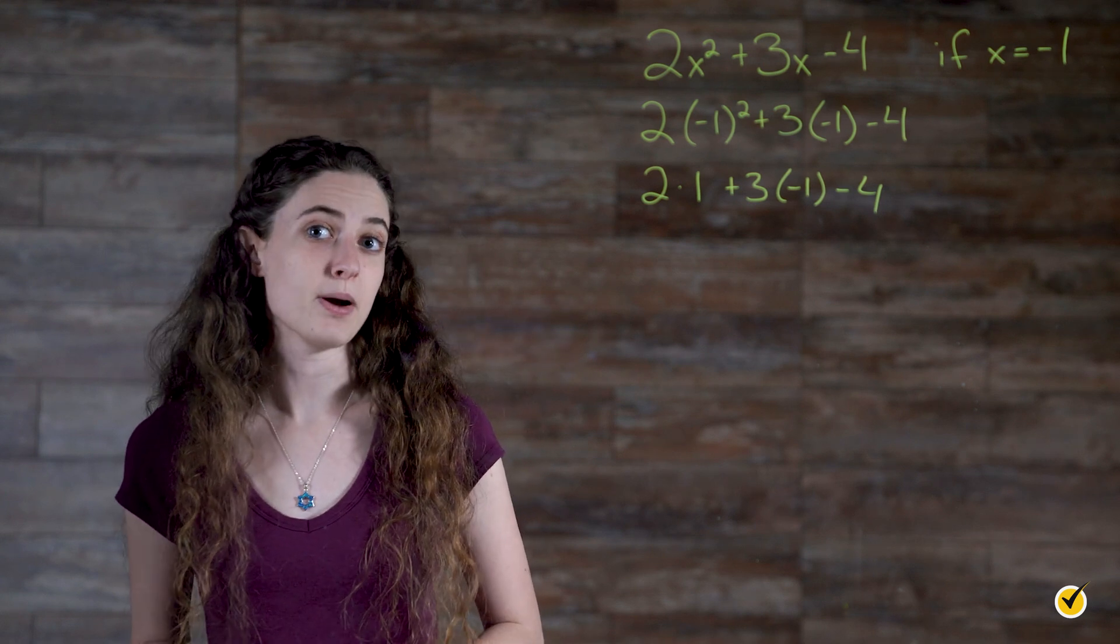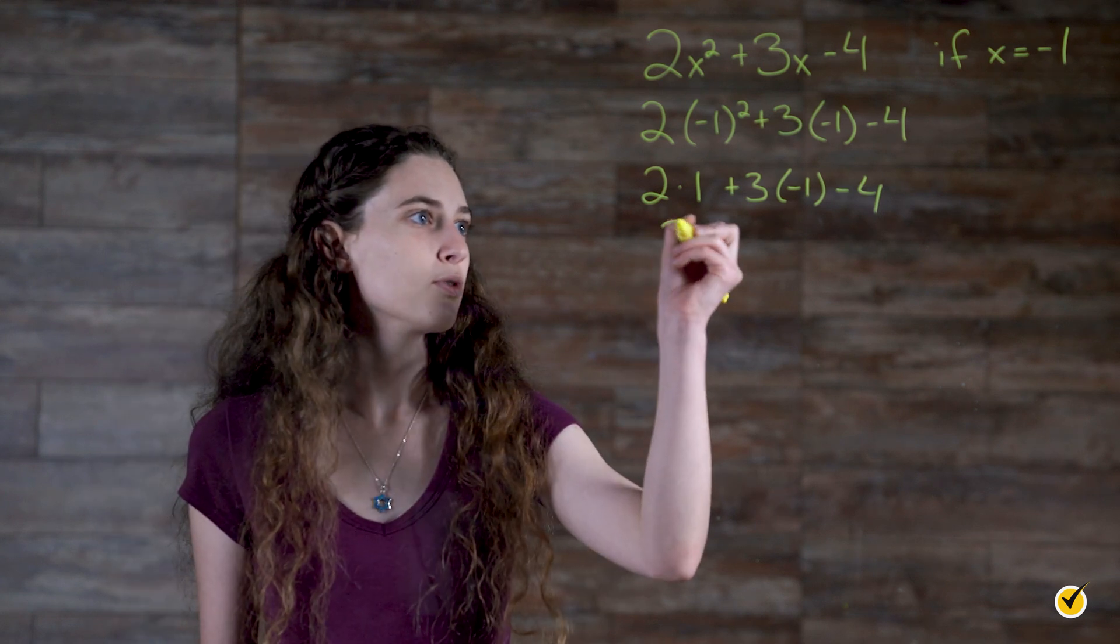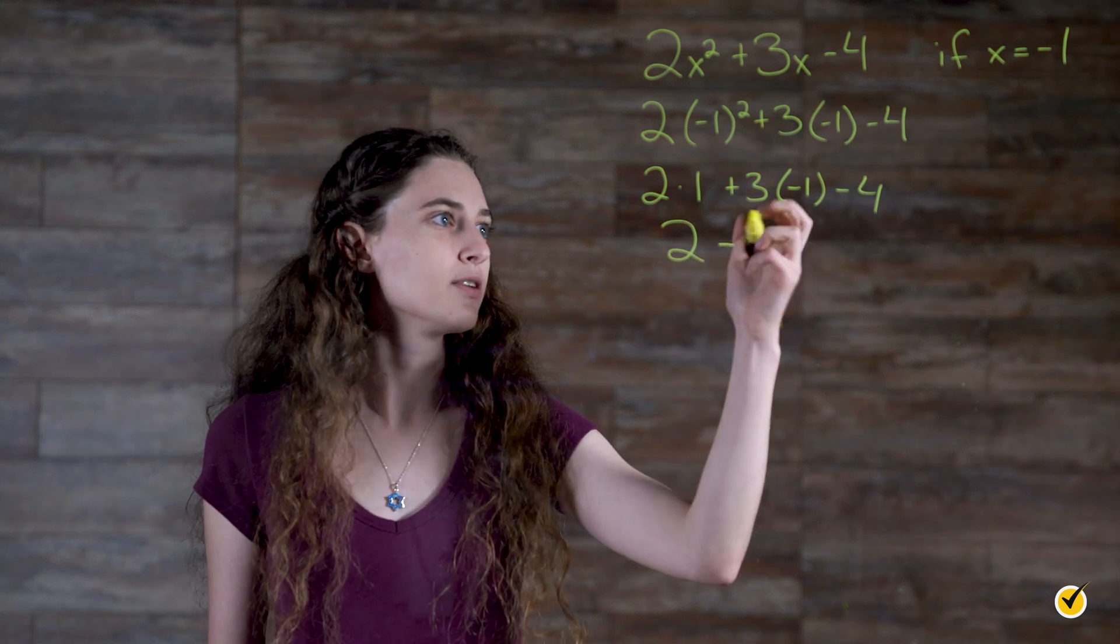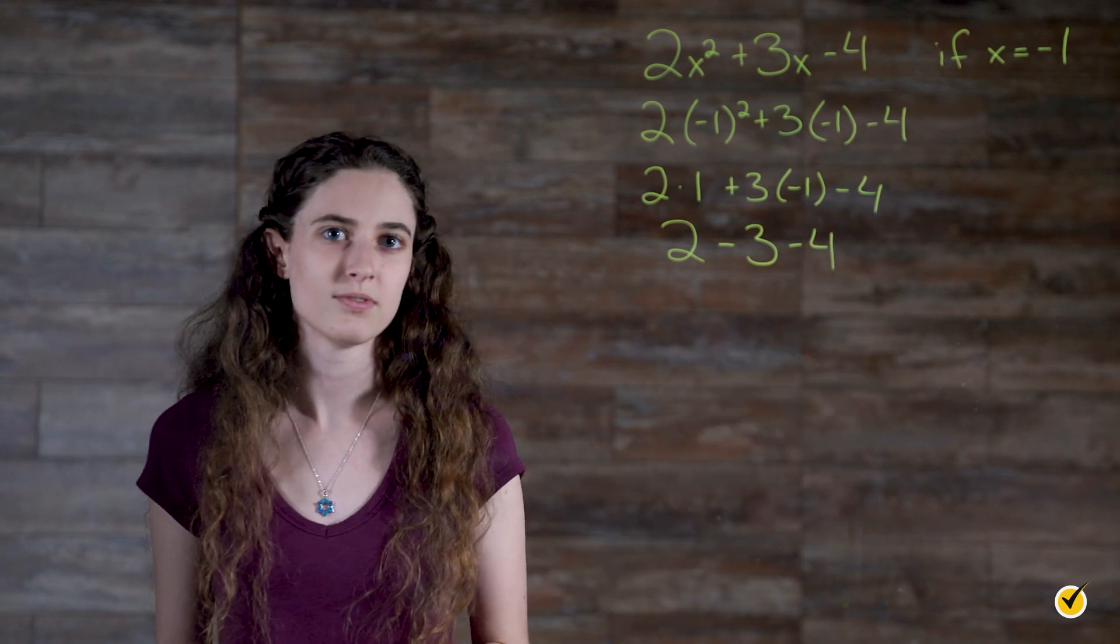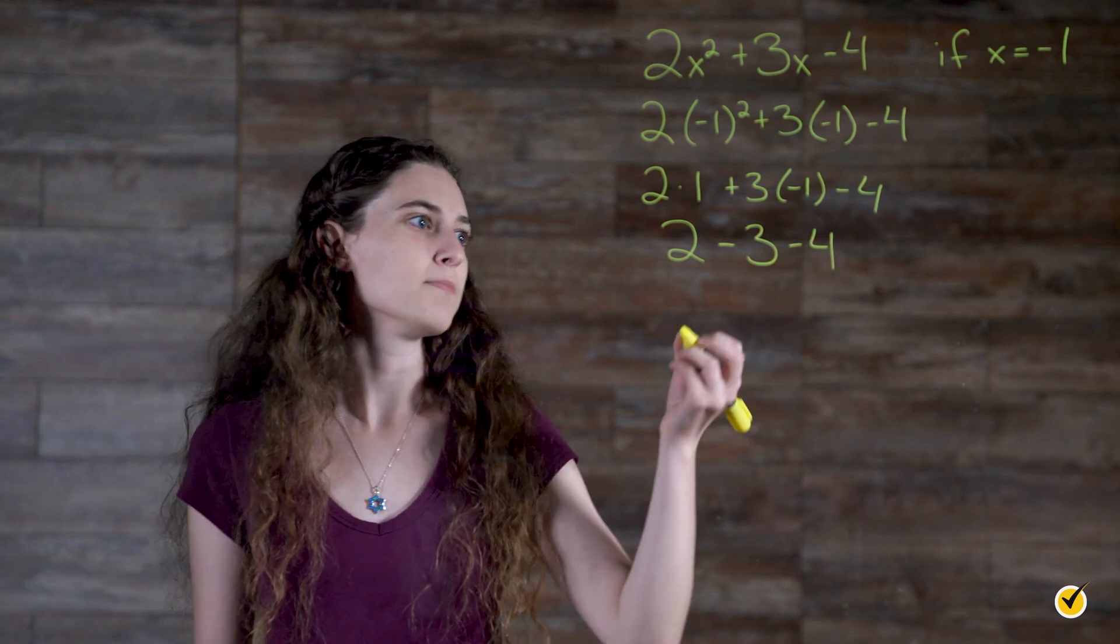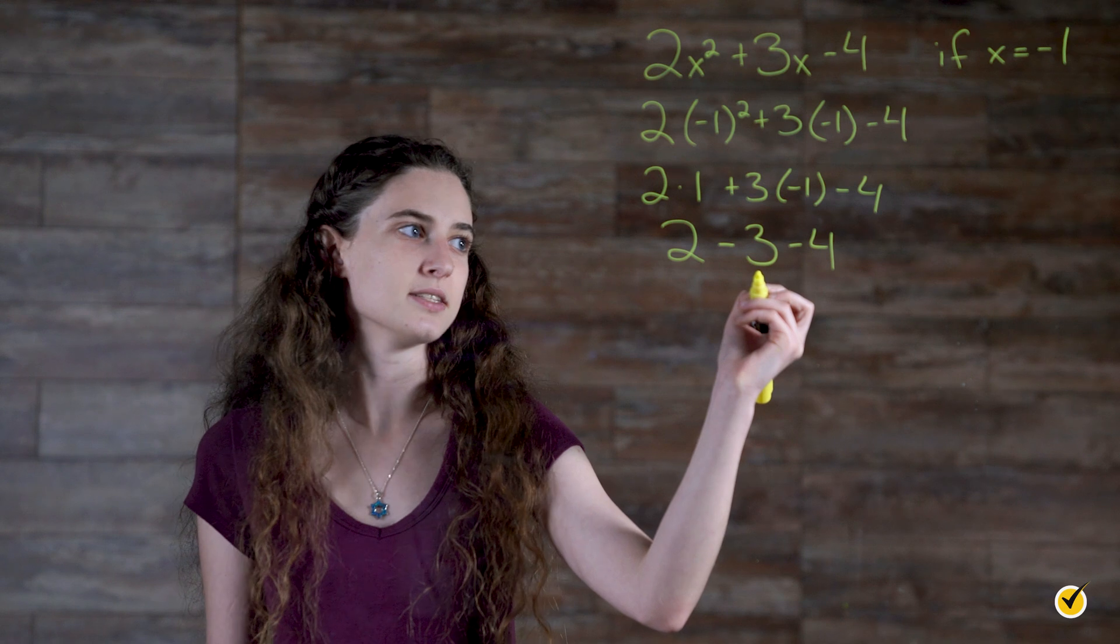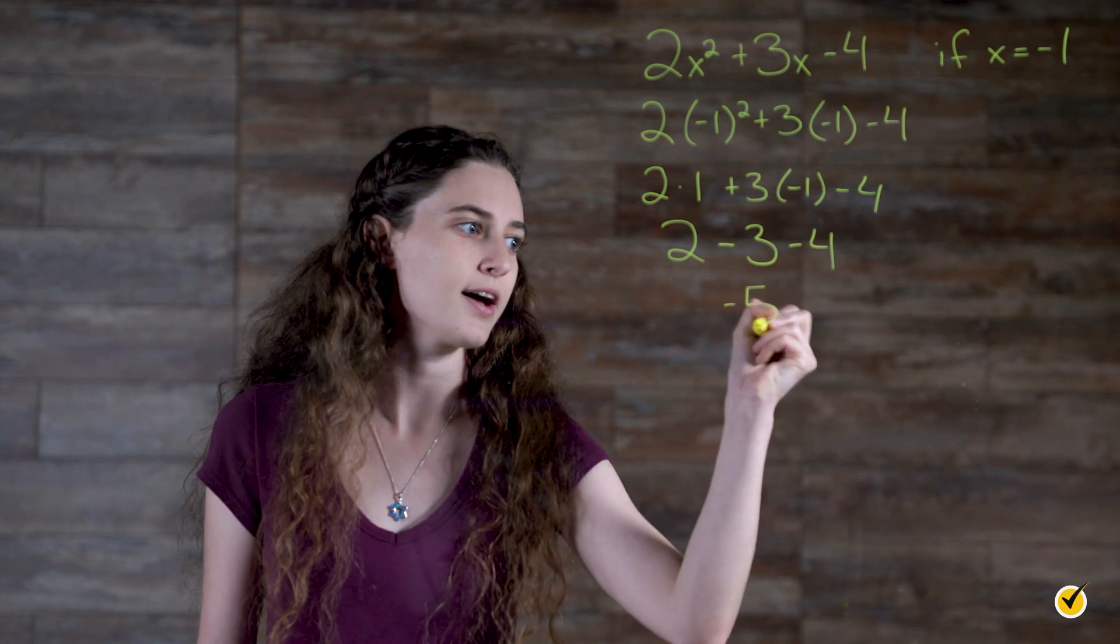Now, we're going to simplify even further by multiplying out our numbers. We have 2, 3 times negative 1 is negative 3, so minus 3 minus 4. And if we simplify even further, we get 2 minus 3 is negative 1 minus 4 gives us negative 5.